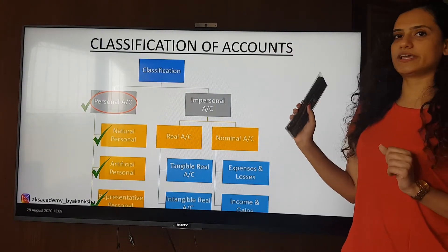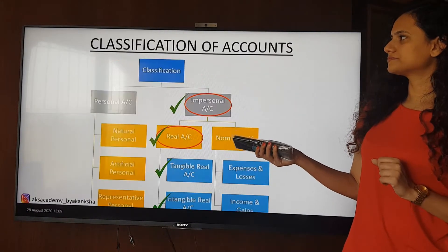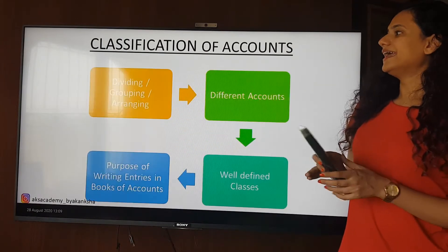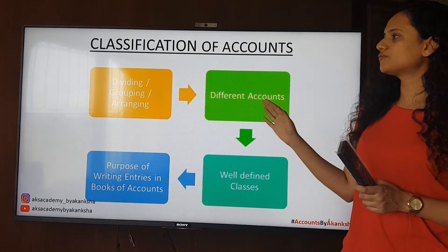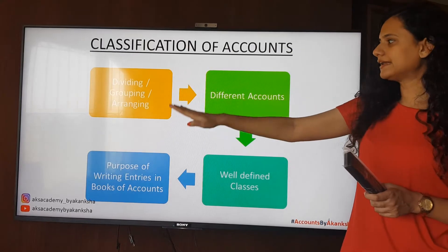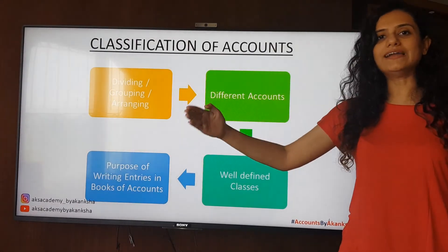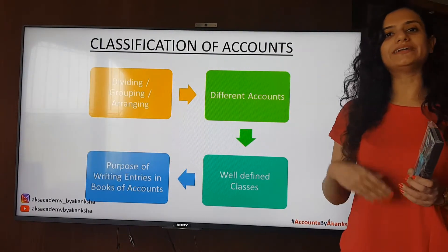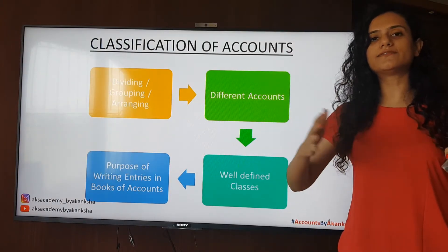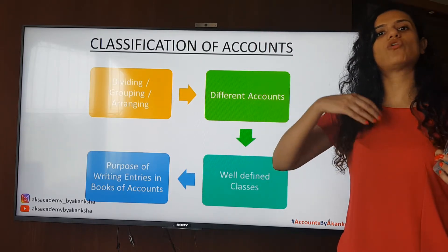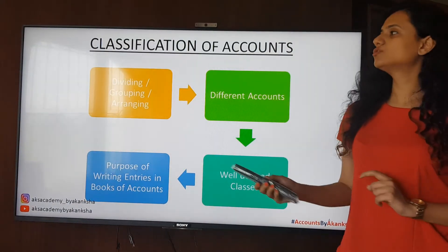Next we have the classification of accounts. In classification of accounts, we divide, group and arrange different accounts into well-defined classes with the purpose of writing book entries with ease. If we correctly classify them into different sections, writing journal entries or ledger postings becomes very easy. That is the reason why we do classification of accounts.